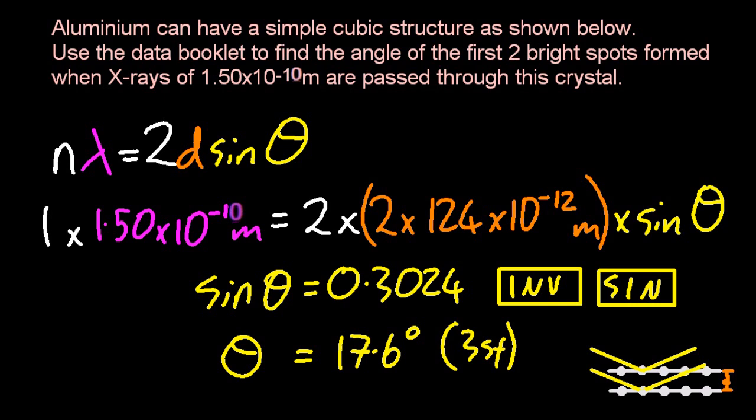For the second bright spot, let's change n to 2. Push all the numbers through again, and I wonder if that's going to give me an angle twice as big. Nope, that's not how sines work. So the second angle is 37.2 degrees.